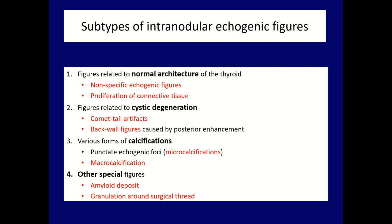The first two are essentially the same and are related to the normal architecture of the thyroid — the spider web-like network composed of connective tissue. The next two subtypes, discussed two weeks ago, are related to cystic degeneration.